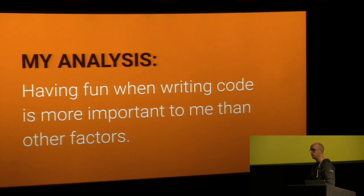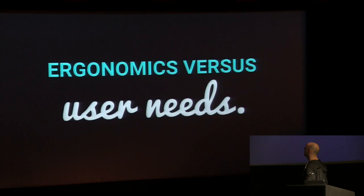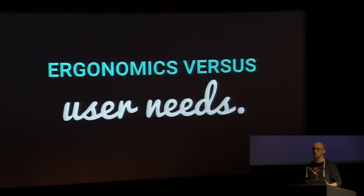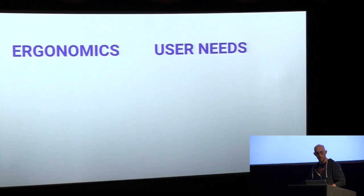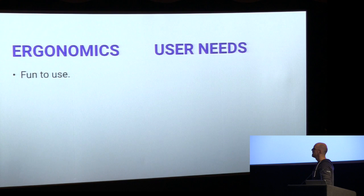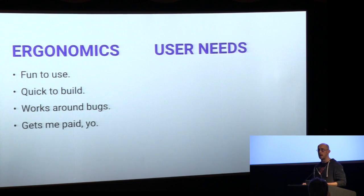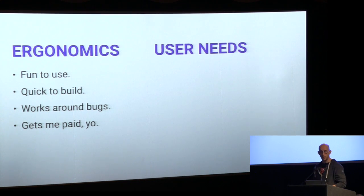What I think is really at stake is this: ergonomics — our comfort, our happiness writing code versus what those human beings at the end of the chain actually experience. The ergonomics are the ease; it's fun to use, quick to build with, works around some lumps in the platform, and gets me paid. Ultimately being able to say I can work with whatever is great. But the user also has needs.